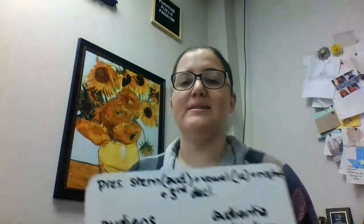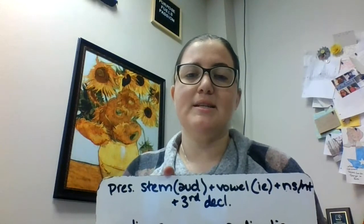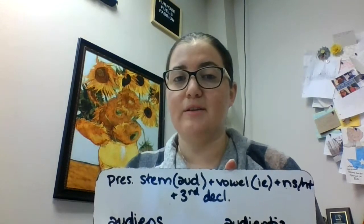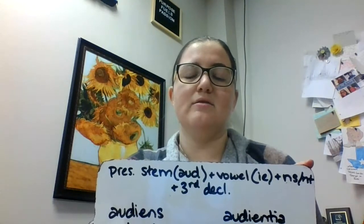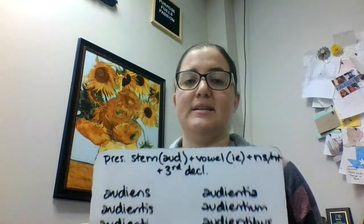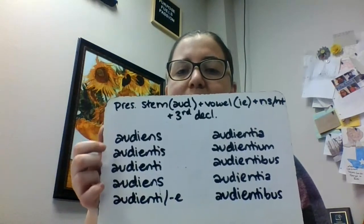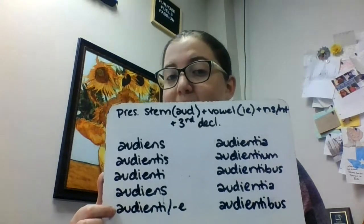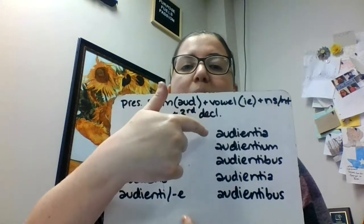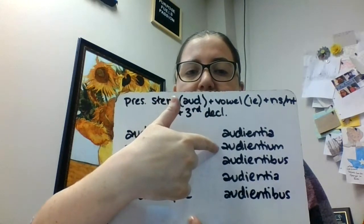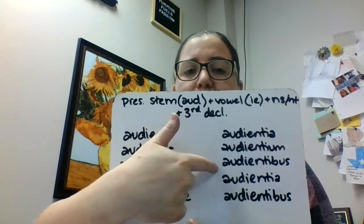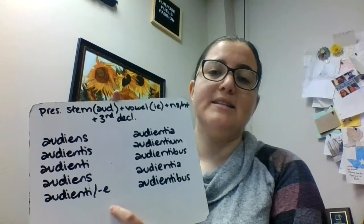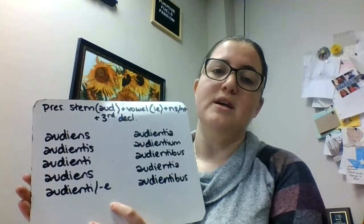Lastly, we're doing one more present active participle. This one, again, we're doing our present stem — which here is 'aud' since we're doing audio. Then we need our middle vowel — remember, this is our imperfect middle vowel still, so we're doing the 'ie'. Then 'ns' for the nominative, or 'nt' for all the others, and third declension endings. We're doing this one in the neuter: audiens, audientis, audienti, audiens, audienti slash audientae, remembering our i-stems, audientia, audientium, audientibus, audientia, audientibus. Third declension endings for our present active participle, using those imperfect middle vowels — so we have the 'ie'.